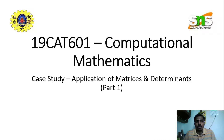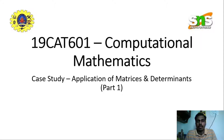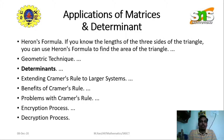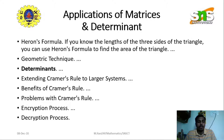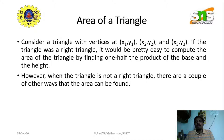Good morning everyone. Today we are going to see a case study on the application of matrices and determinants. This is part one, and in the next case study we will see more applications. The areas we can apply matrices and determinants include Heron's formula, geometric techniques, extending Cramer's rule to larger systems, benefits and problems with Cramer's rule, and encryption and decryption processes.